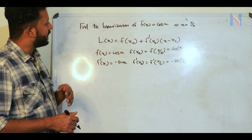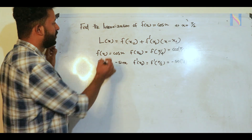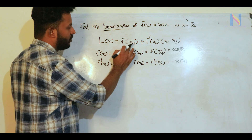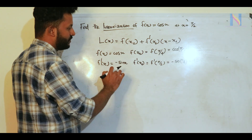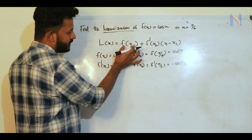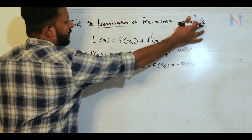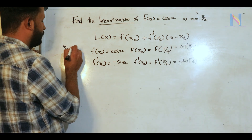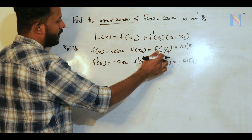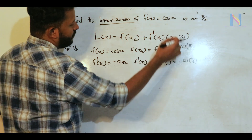Next question: find the linearization of f(x) = cos x at x₀ = 5π/2. The linearization formula is L(x) = f(x₀) + f'(x₀)(x - x₀). Here f(x) = cos x and x₀ = 5π/2. We need f(x₀) and f'(x₀).